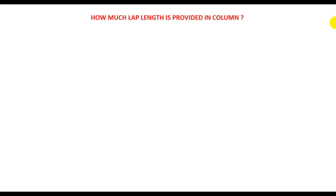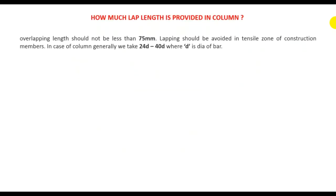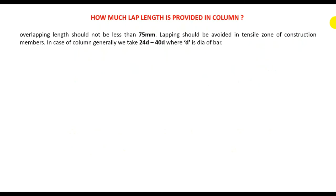First of all, how much lapping length is provided in columns? The lapping length should not be less than 75 mm. So we have to provide a minimum lapping length of 75 mm.